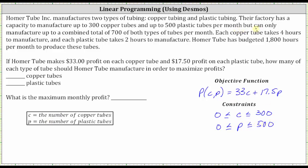They can only manufacture a combined total of 700 of both types of tubes per month, which means C plus p must be less than or equal to 700. Finally, we have a constraint involving manufacturing time: each copper tube takes four hours, each plastic tube takes two hours, and there's a budget of 1,800 total hours. So 4C plus 2p must be less than or equal to 1,800.